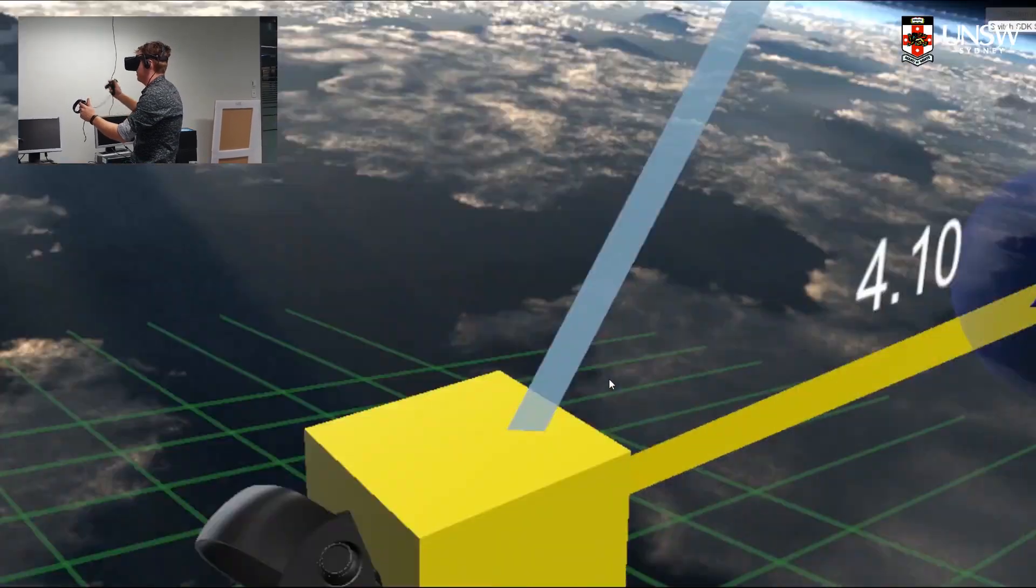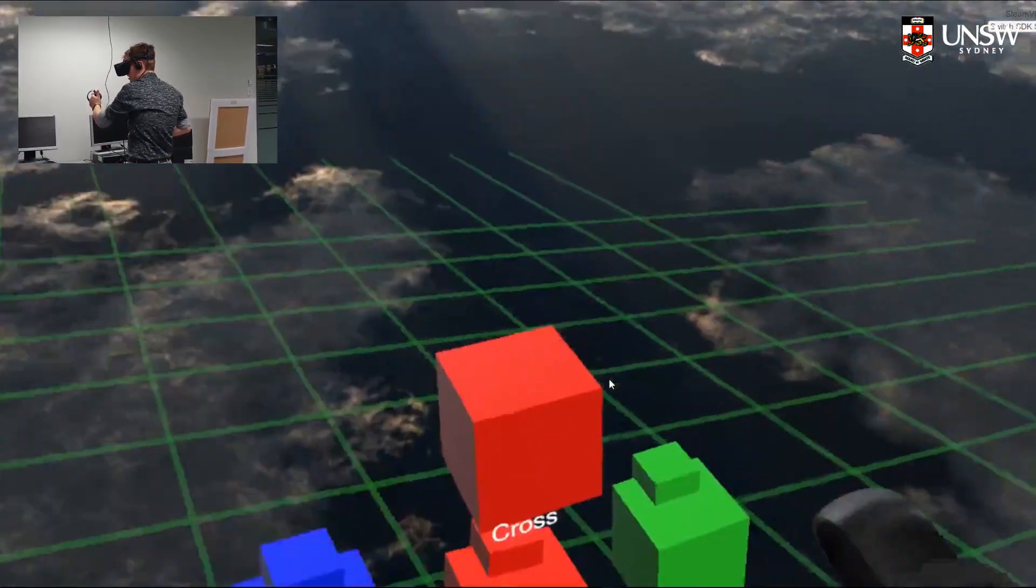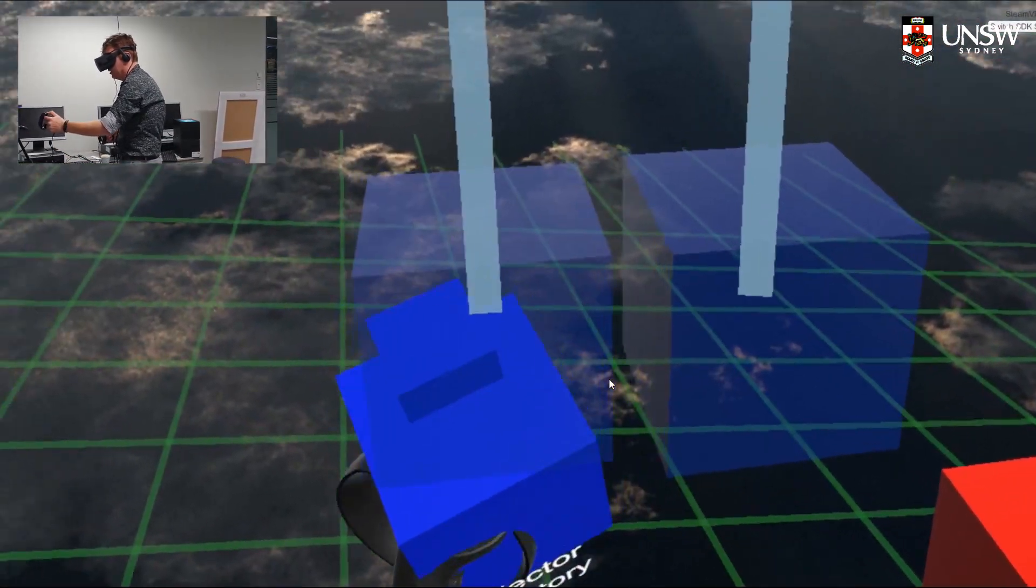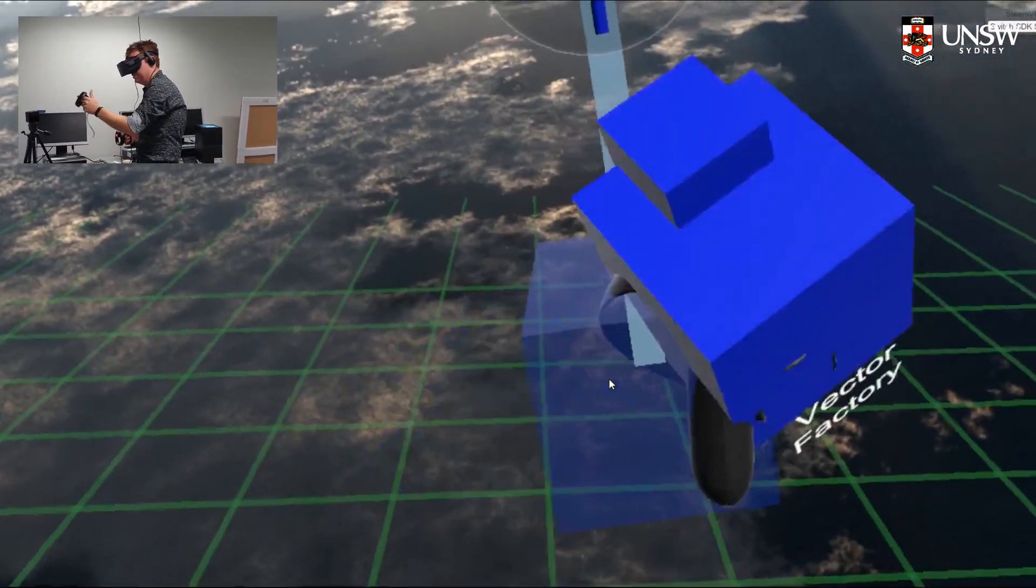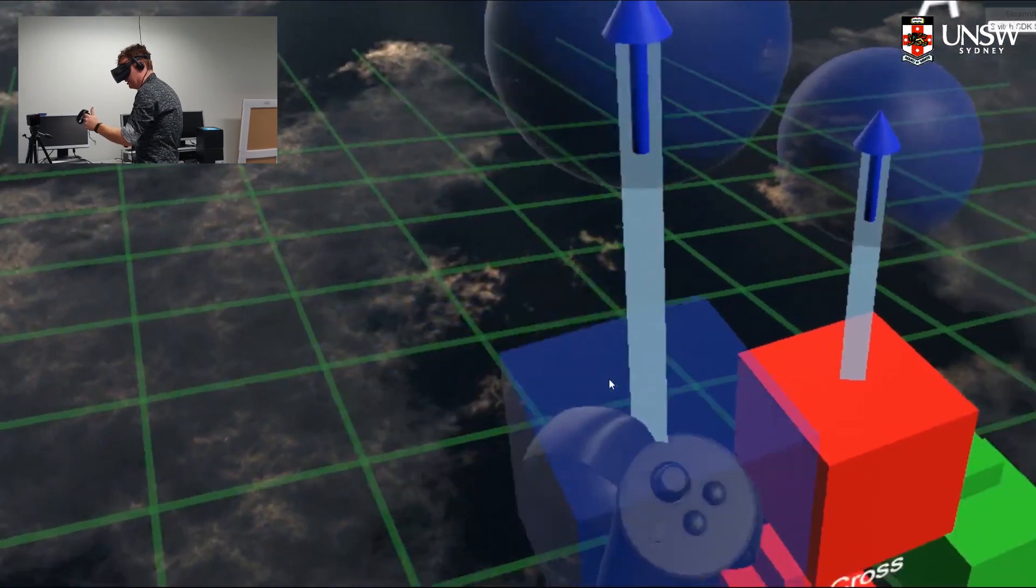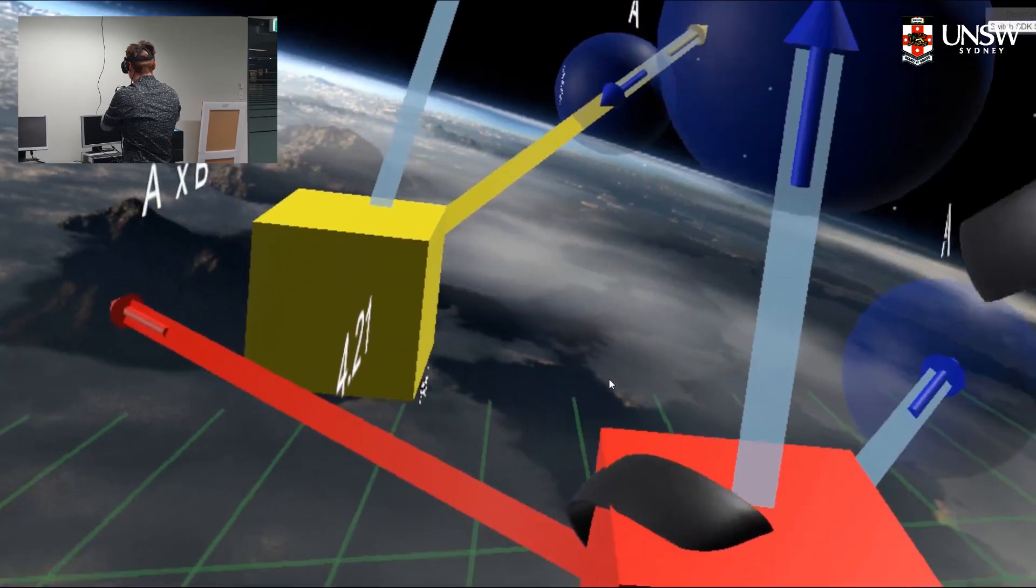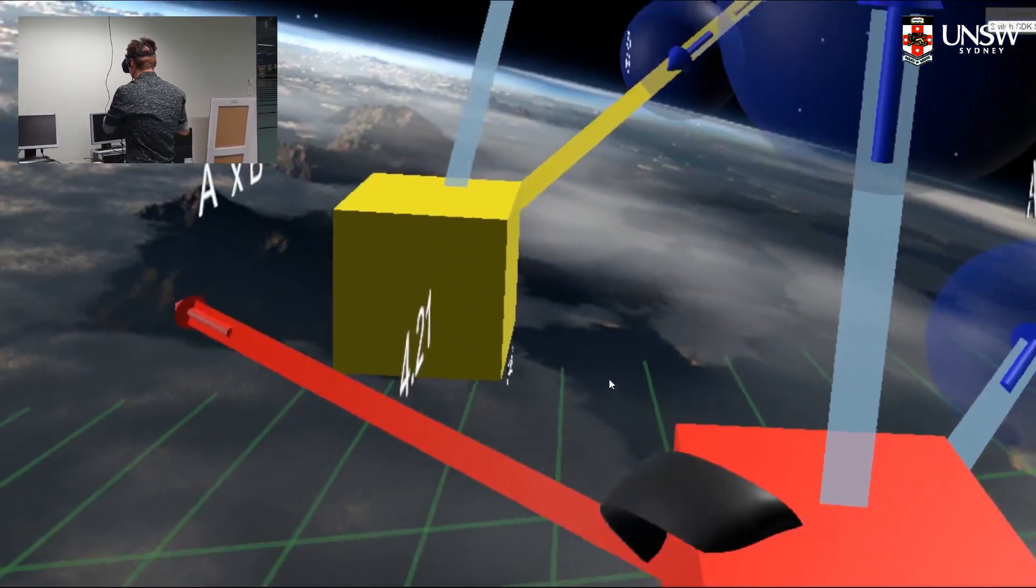We also have the cross product which is another operation that I think students understand pretty well. It's geometrically just a vector which points out perpendicular to both these objects.